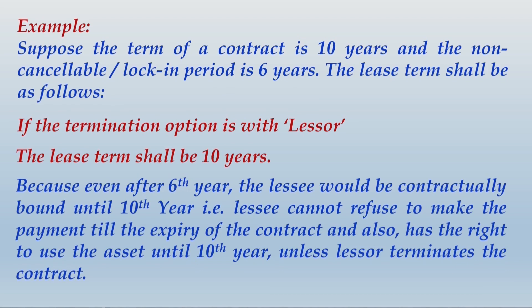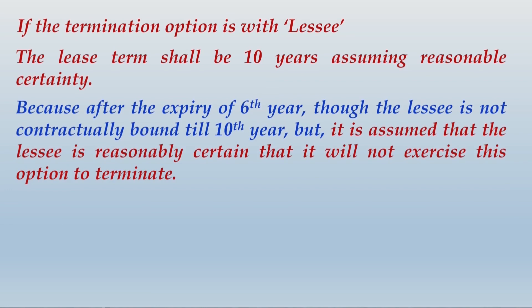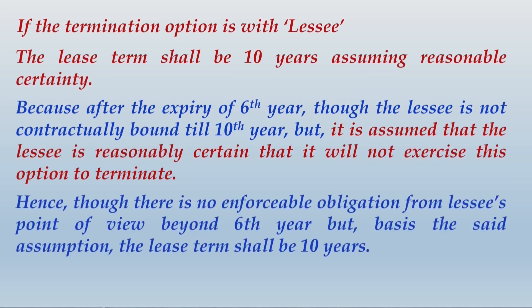This example is already given in your textbook. The other possibility: if the termination option is with the lessee, in this case also the lease term shall be ten years. If the lessee holds the option to terminate, we can make an assumption that at the commencement of the lease the lessee is not going to exercise the option of termination. Instead, we can say the lessee is assumed to use the option of extension beyond six years. After expiry of the sixth year, though the lessee is not contractually bound till the tenth year, it is assumed that the lessee is reasonably certain it will not exercise this option to terminate.